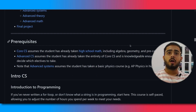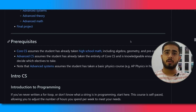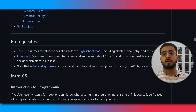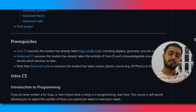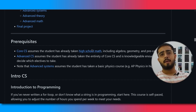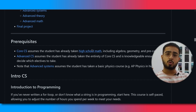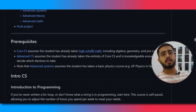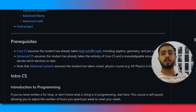Talking about the prerequisites you need for this particular course: first, you need core CS knowledge, which includes algebra, geometry, and pre-calculus from high school. You need basic maths from 11th or 12th grade. If you want to revise something, this link will take you to Khan Academy where you can do some refresher courses.